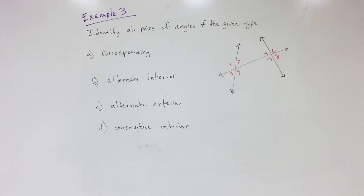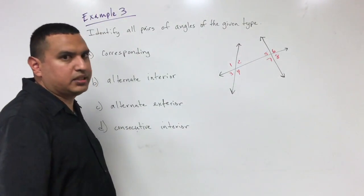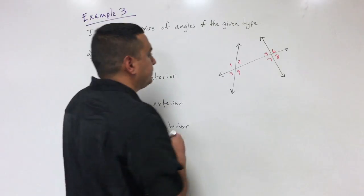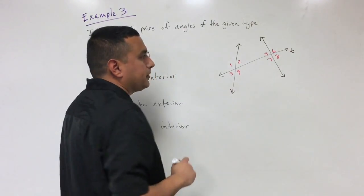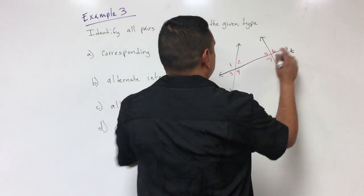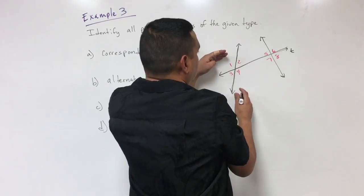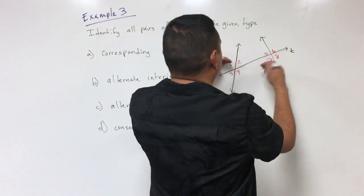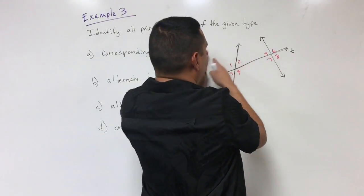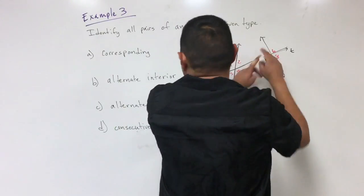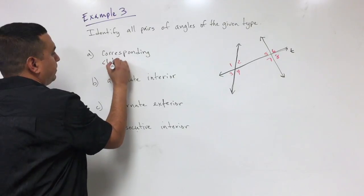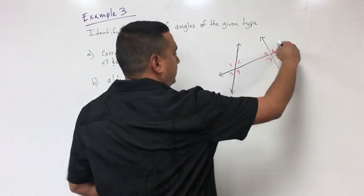Example three asks us to identify all pairs of angles of the given type. Part a is corresponding angles. Corresponding means they're in the same relative position. Line T is the transversal. Angle one is above the transversal and to the left of its line. Looking for the corresponding angle — it should also be above the transversal — that would be angle five, since it's on the left side of its line. So angle one and angle five are corresponding.